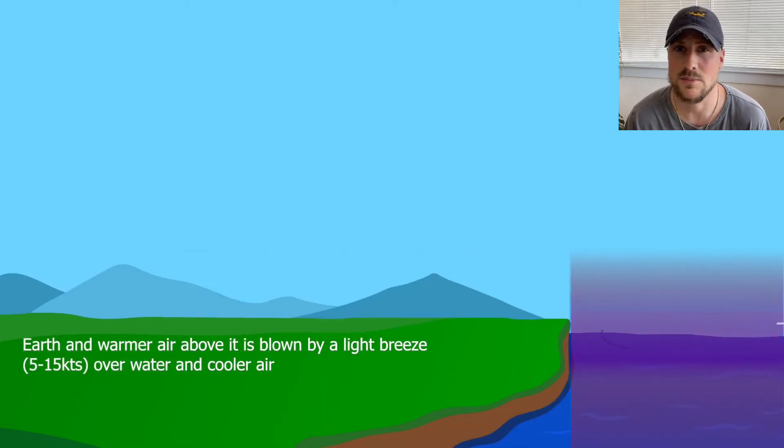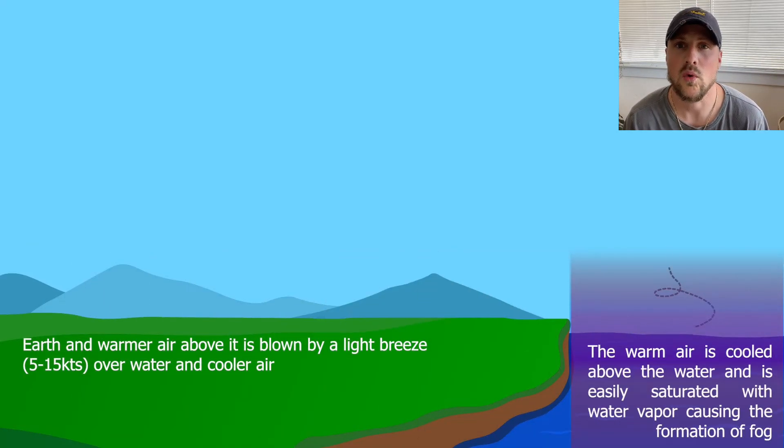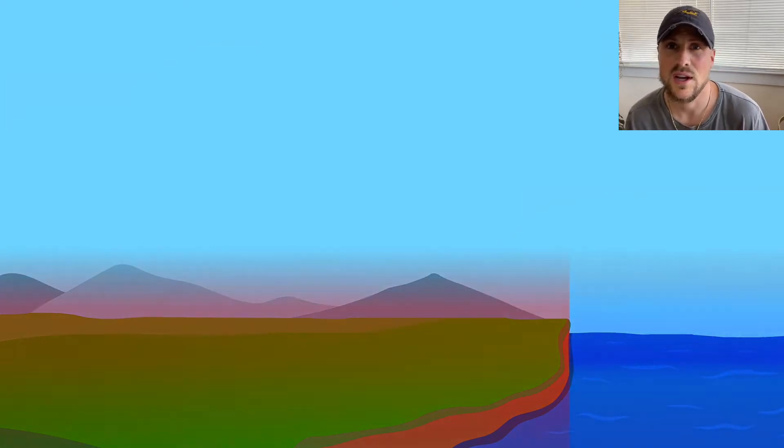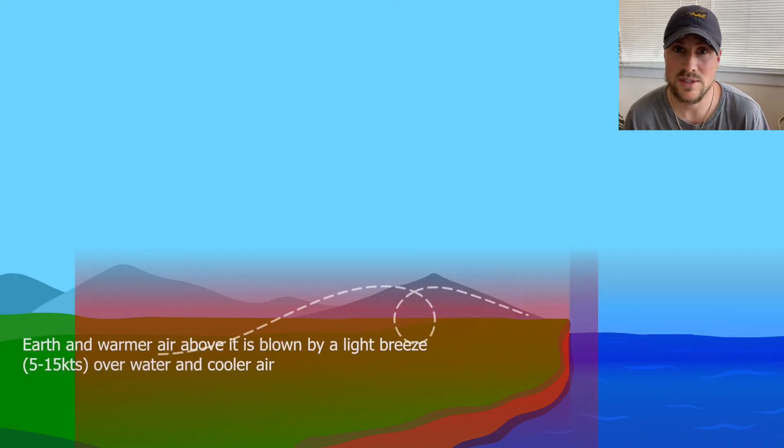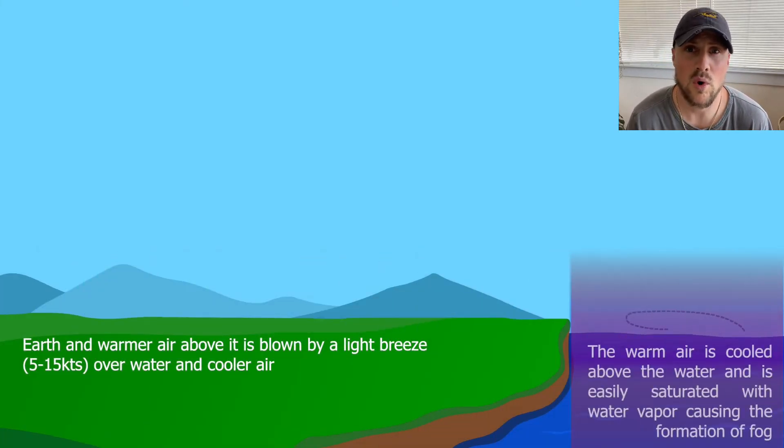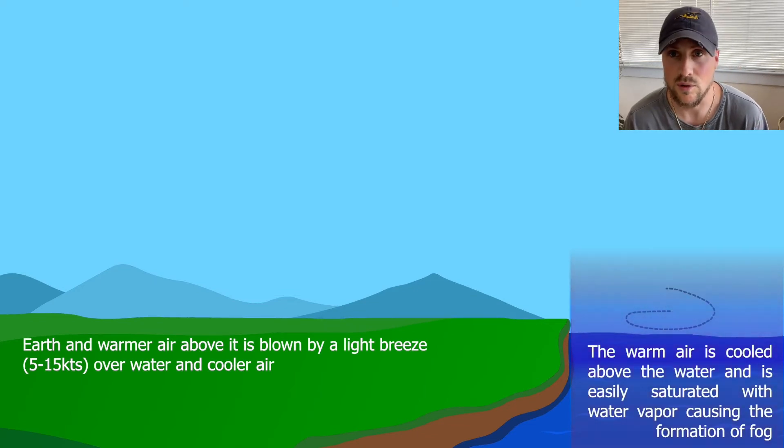Advection fog is most likely to be seen near the coast. Warmer and more moist air can blow in from over the ocean onto the land where it condenses or, as we see here, can be blown from land over the water where it collects moisture and cools to the dew point to form fog.